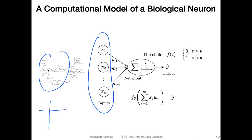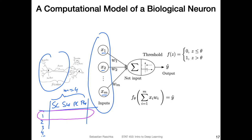In the iris dataset we had a tabular dataset with sepal length, sepal width, petal length, and petal width — four features — and then the number of training examples one, two, three, four and so forth. So here we have m features where m equals four: x1, x2, xm. You can think of it as a feature vector corresponding to the first training example.